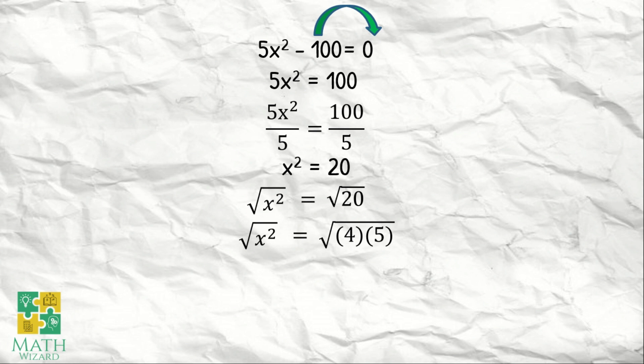Why did we choose 4 times 5? It could be 10 times 2. We chose 4 times 5, because 4 has a square root. So, this becomes x is equal to plus or minus 2 square root of 5. Separate them. x is equal to 2 square root of 5, and x is equal to negative 2 square root of 5.